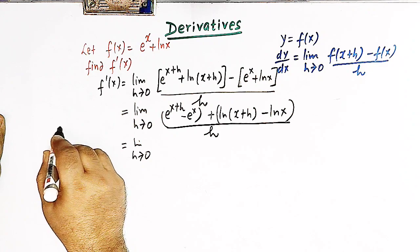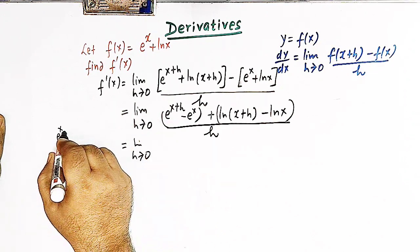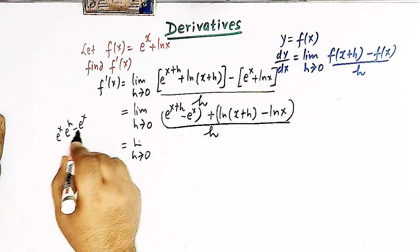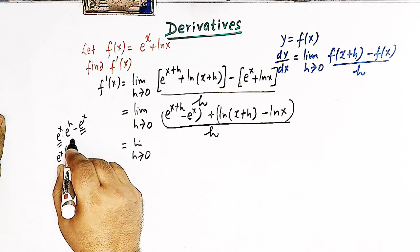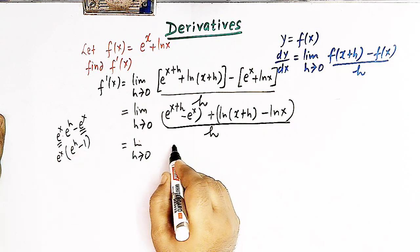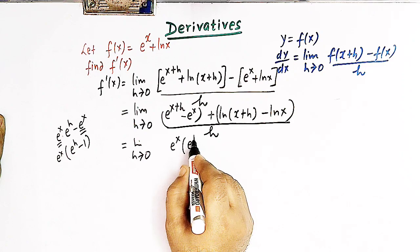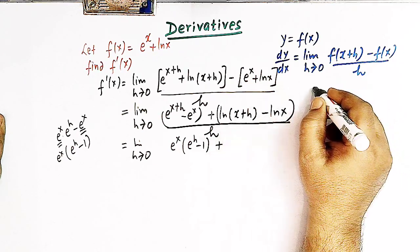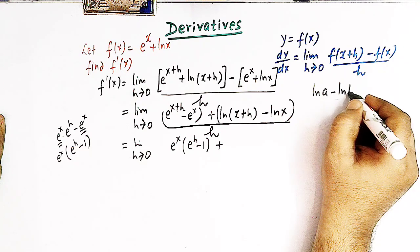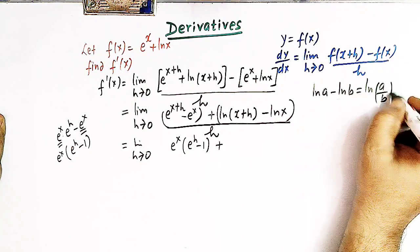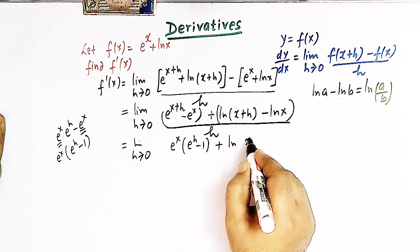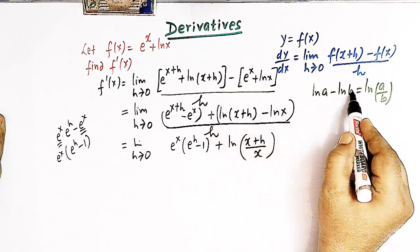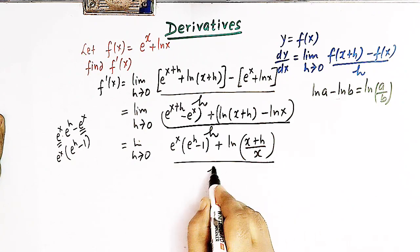We can write e raised to x plus h as e raised to x times e raised to h, and then subtract e raised to x, taking e raised to x common to get e raised to x times the quantity e raised to h minus 1. For the log terms, we use the property log a minus log b equals log of a over b, giving us log of x plus h over x, all over h.